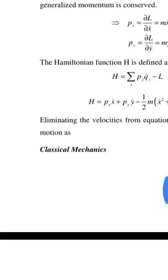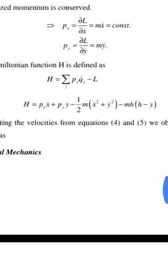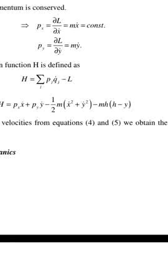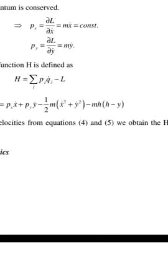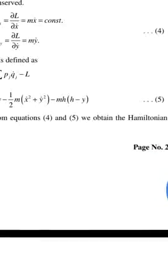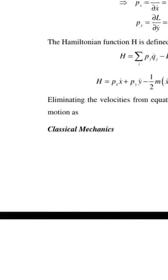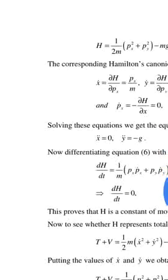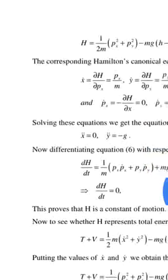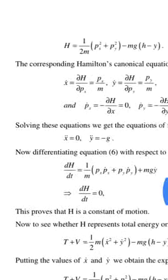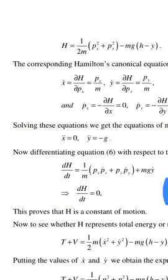Eliminating the velocities using the momentum expressions, we obtain the Hamiltonian of the motion as: H = (1/2m)(Px² + Py²) - mg(h - y).